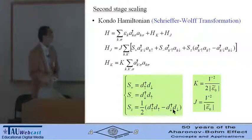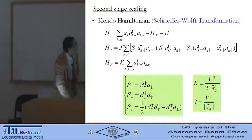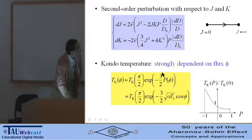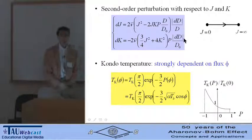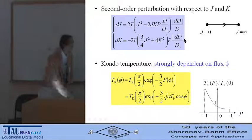In the second stage scaling, we make the Kondo Hamiltonian by the Schrieffer-Wolf transformation. We have exchange coupling J and potential scattering K. J and K are renormalized by this scaling equation. Finally, we obtain the analytical expression for the Kondo temperature.